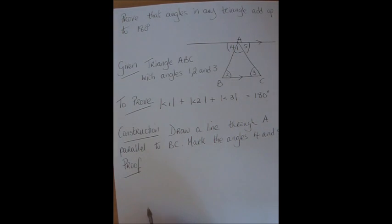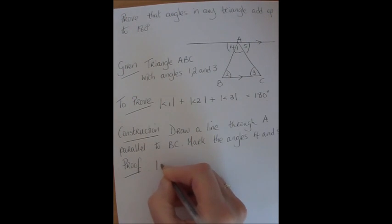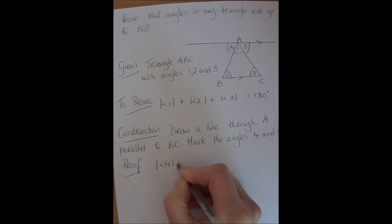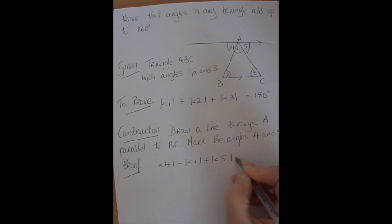Now with our prior knowledge remember that we said that on a straight line we have a straight angle. So these three angles here 4, 1 and 5 add up to 180 degrees. So that's my starting point. And I'm going to write down how I know that because this is a straight angle.